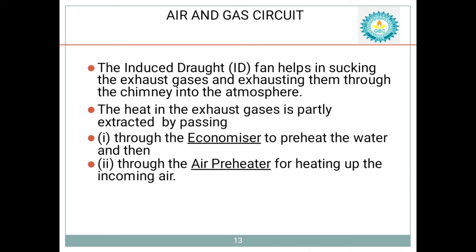The draft system helps to suck the exhaust gases and send them to the atmosphere through the chimney, and similarly sucks air from the atmosphere and sends it to the combustion chamber. The economizer is a device used for preheating the water, and the air preheater is a device used for preheating the air. These are the uses of the draft system, economizer, and air preheater in the air and gas circuit.